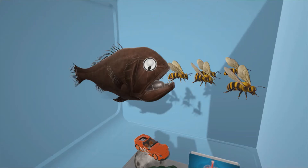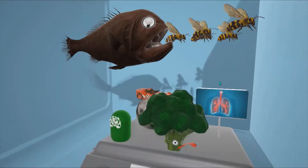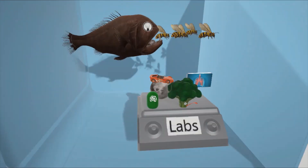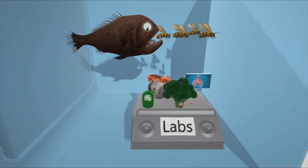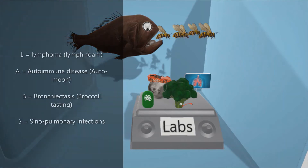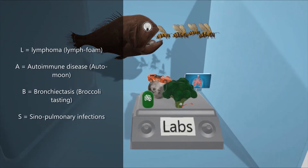What are the presentations in Common Variable Immunodeficiency? Let's take a look at what this fish is looking at — a lab measuring thing that says LABS on it. LABS is the mnemonic for the presentations: L is for lymphoma, A is for autoimmune disease, B is for bronchiectasis, and S is for sinopulmonary infections.